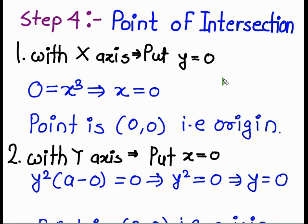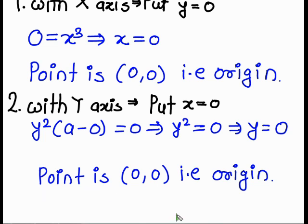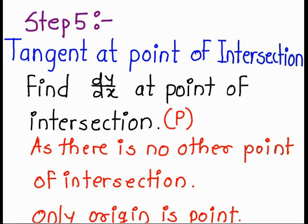In step number 4, we find the point of intersection with the x-axis and y-axis. For this step, we get that only the origin is the intersection point. In step number 5, we find the tangent at the point of intersection. We already found the tangent at origin, so we go to step number 6.